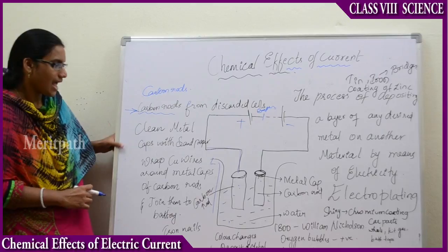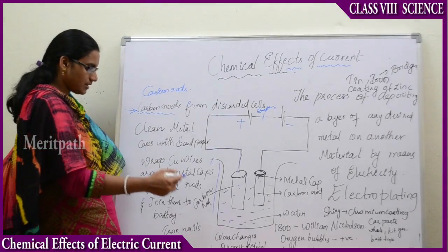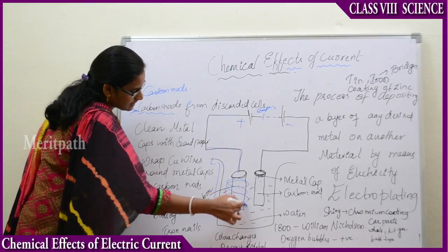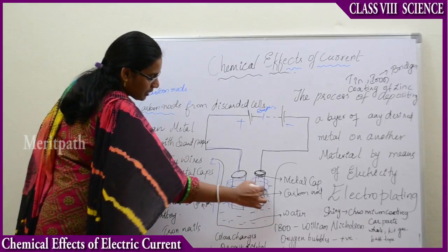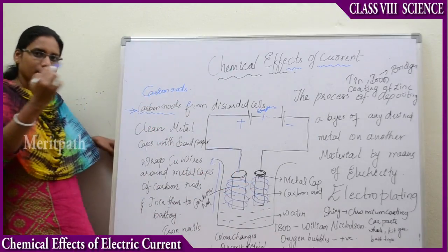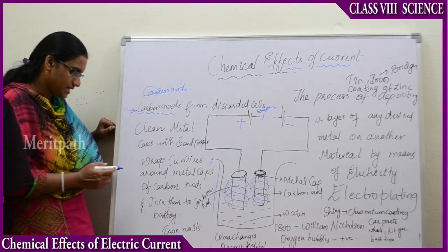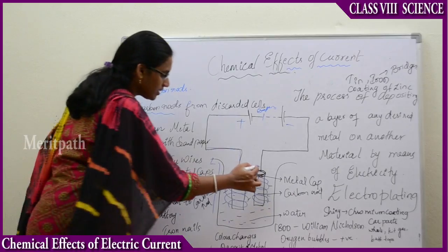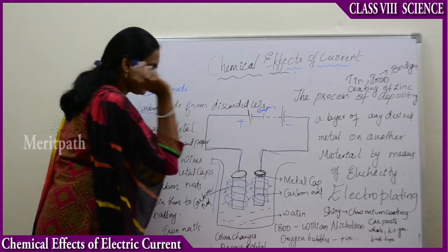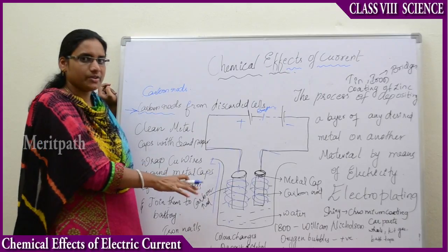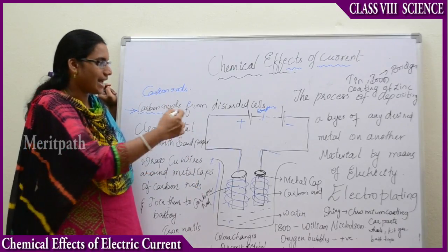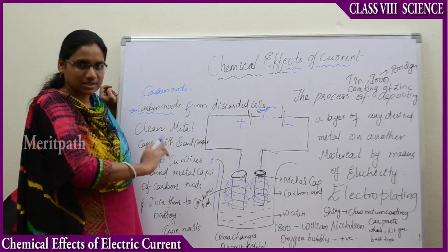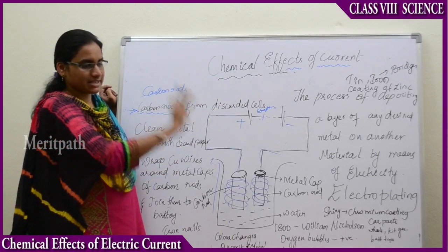What I am going to do is: first, I have taken carbon rods and I will be wrapping these with copper wire. That is the second step. And the third step is I will join these copper rods with the help of a battery. Then, I have joined it with the help of a battery. This is the electrolyte solution and this is the electrical circuit.